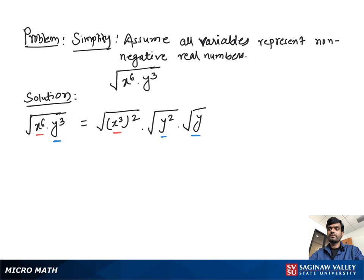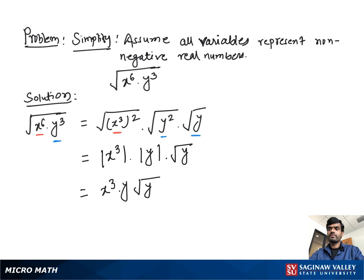We then take the absolute value of x cubed and the absolute value of y times the square root of y, because x and y may be negative. So we write the absolute value of x cubed times the absolute value of y times the square root of y, or simply x cubed times y times the square root of y, assuming x and y are non-negative.